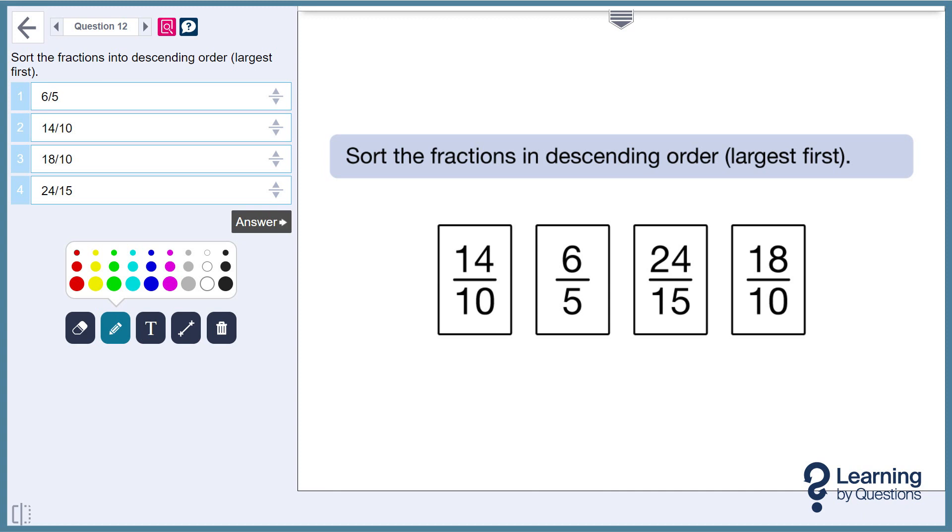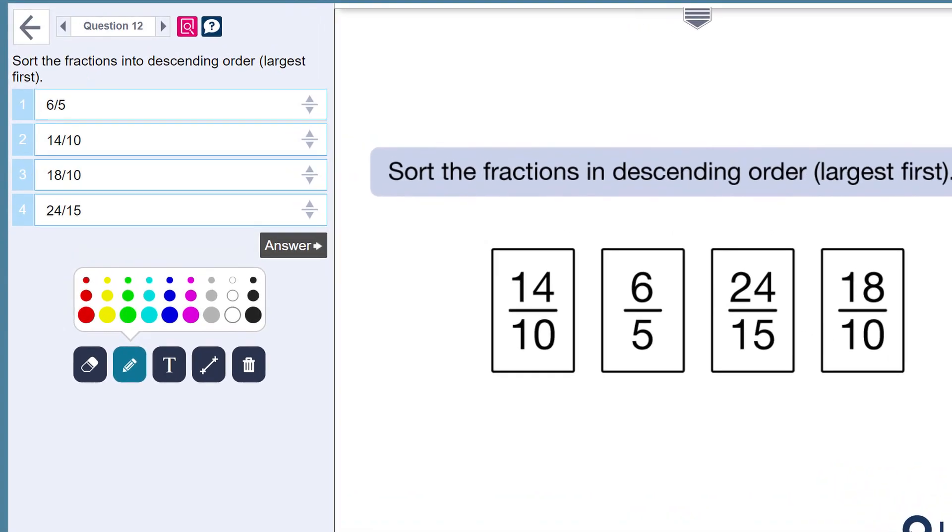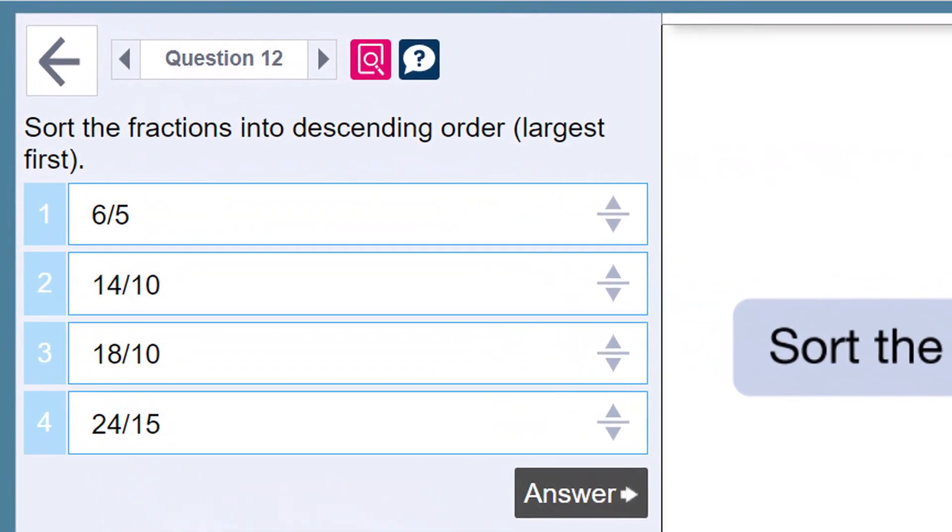Here is the second most common wrong answer. What have these pupils done wrong? A further 7% of all responses sort the fractions from smallest to largest, again likely only using the numerators.